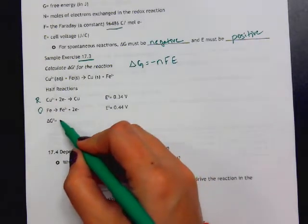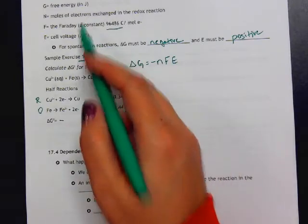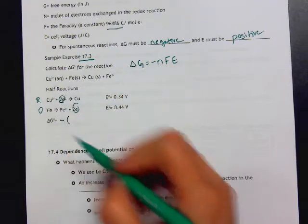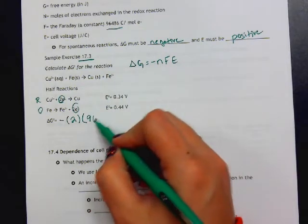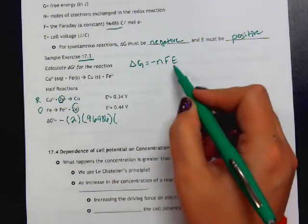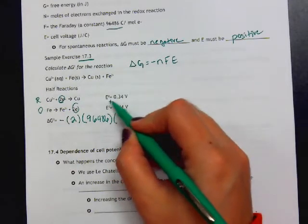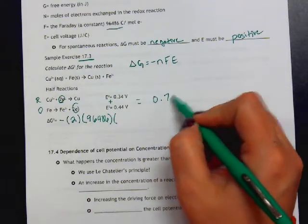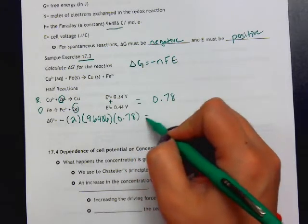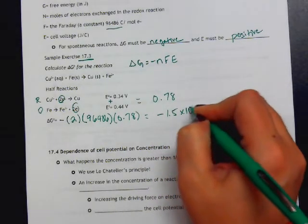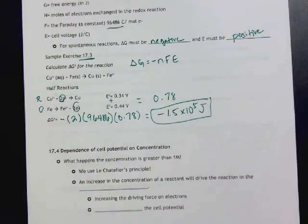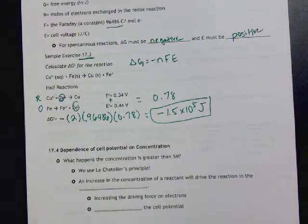To calculate our delta G, we need to say minus n, which is the number of moles of electrons that were exchanged. In this instance, there are two moles of electrons being exchanged, times our Faraday's constant, which is 96,486, times our cell potential. To get the cell potential, we just add these two together, and we get 0.78. When we multiply those together and calculate our delta G, we find that value is negative 1.5 times 10 to the fifth joules.